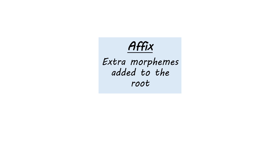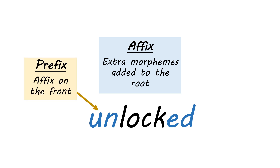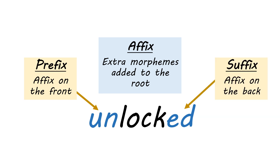Around the root we often get morphemes called affixes — these are extra morphemes that get added to the root. In the word 'unlocked,' our affixes are 'un-' and '-d.' There are two types of affixes that are most essential: prefixes, which attach to the front of the word, and suffixes, which attach to the back. To be an affix, you have to be something that you can clearly separate out from the word, and this contrasts with changes to roots that happen in other ways.